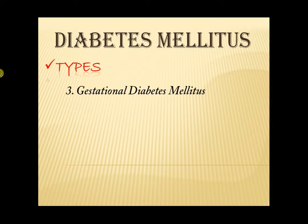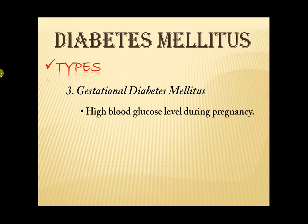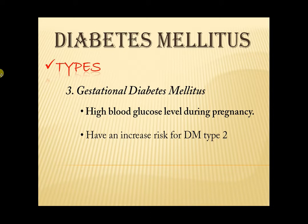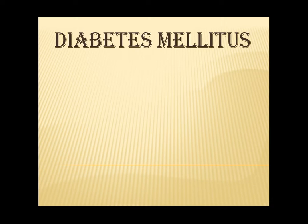Third, Gestational Diabetes mellitus. It happens when there is a high blood glucose level during pregnancy. As the hormones during pregnancy change, it also affects the action of the insulin. Patients with GDM during pregnancy have an increased risk for Type 2, though the blood sugar level usually goes back to normal after giving birth. Insulin-blocking hormones produced by the placenta cause this type of diabetes. The etiology of diabetes mellitus is still unknown but these risk factors will increase the chance of having it.